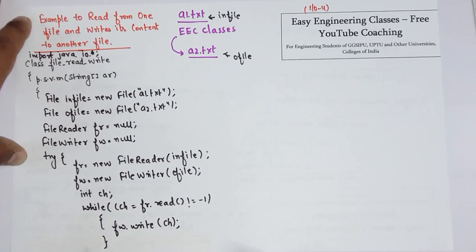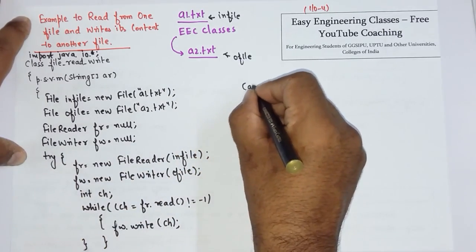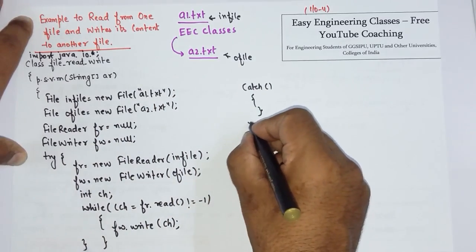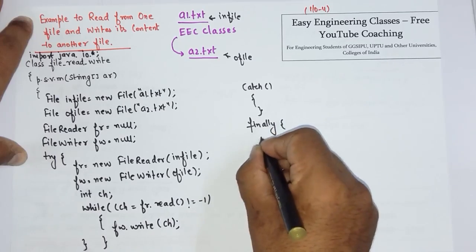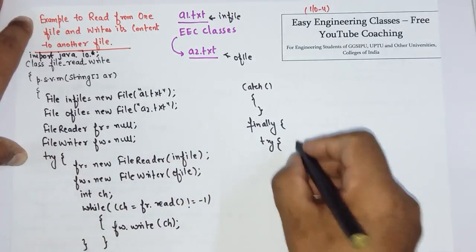After that you can close this try block with a catch block. And in the finally block you have to close both - fr.close() and fw.close().